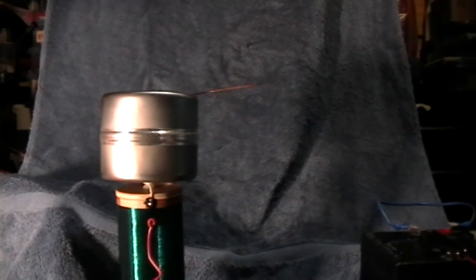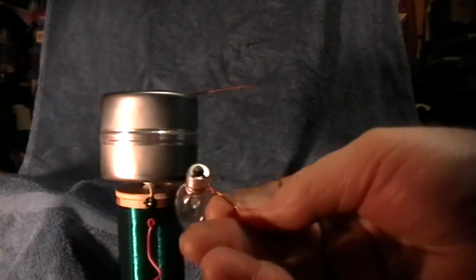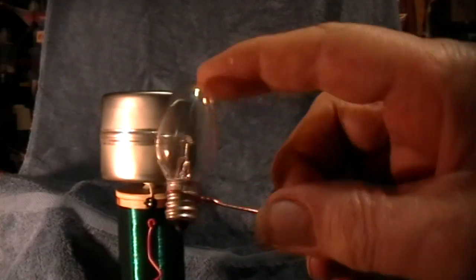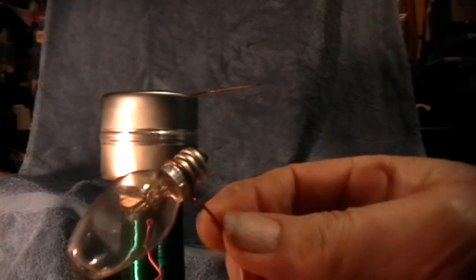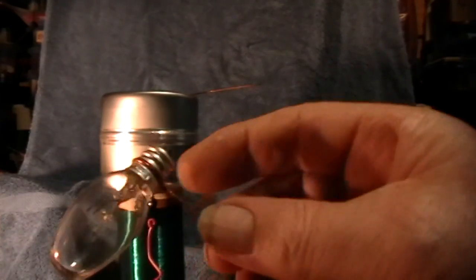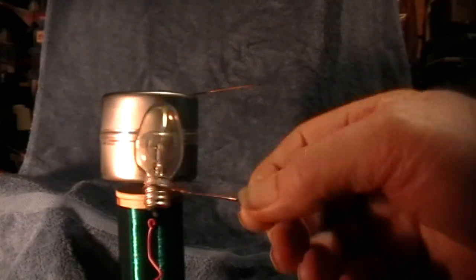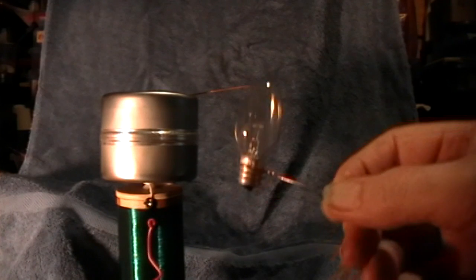And this is a 120-volt, 5-watt nightlight bulb of the type that we all have seen, and I've just got one wire connected to it so that I can hold it like this. So let me connect the coil to the 24-volt supply.